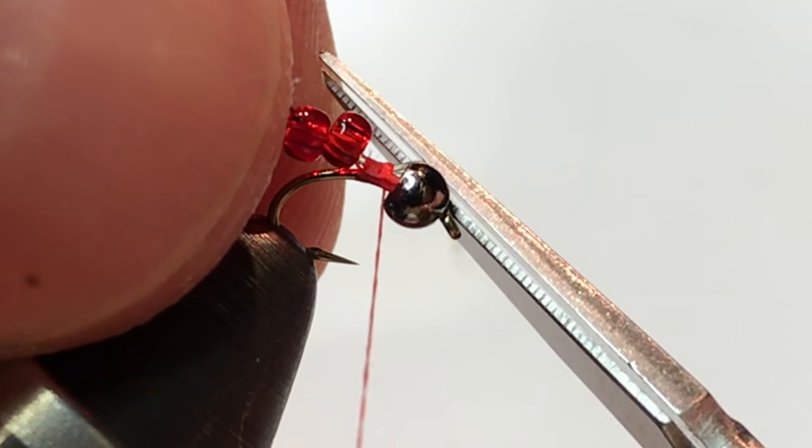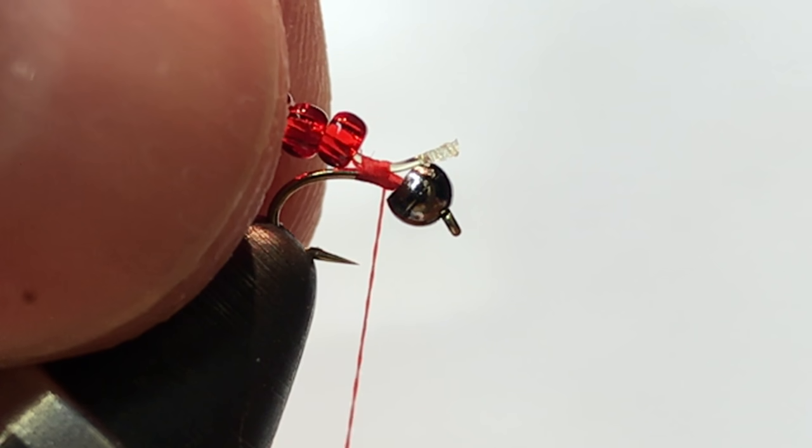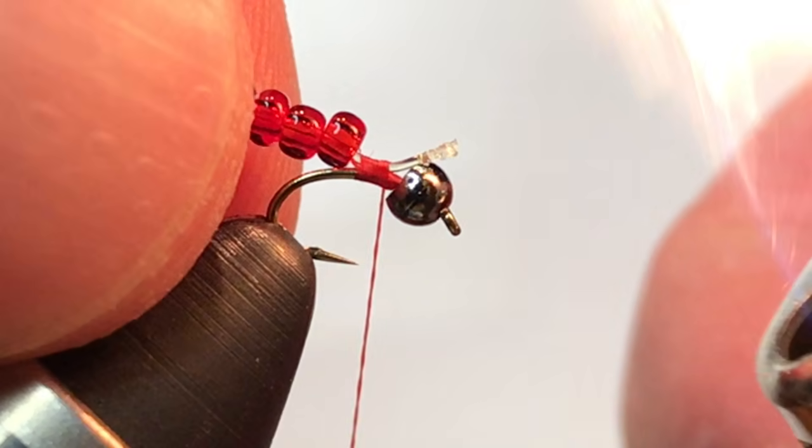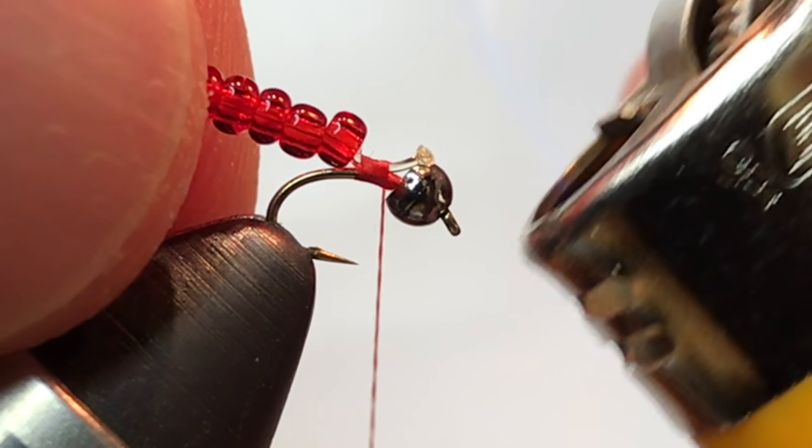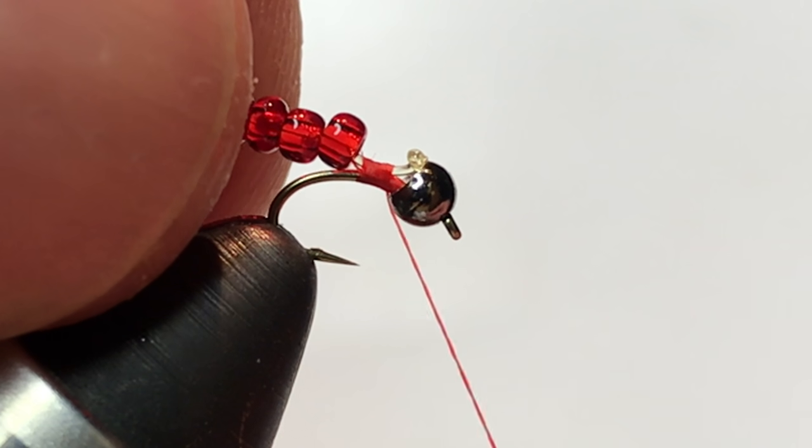Now cut the monofilament just on top of the bead with a sharper pair of scissors than I have here. Use your trusty lighter to melt that side of the mono down back to just behind the bead to create another nice anchor ball.